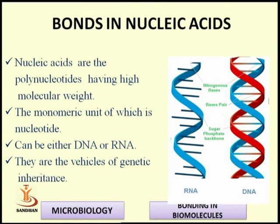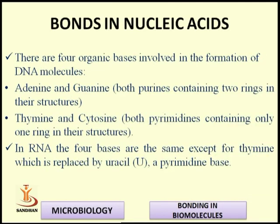The major bond playing a role in lipids is the ester bond. The fourth biomolecule is nucleic acid. Nucleic acids are polynucleotides of high molecular weight; their monomeric units, nucleotides, can be either DNA or RNA. They are the vehicles of genetic inheritance. In DNA, the four organic bases are adenine and guanine (purines, containing two rings) and thymine and cytosine (pyrimidines, containing one ring). In RNA, thymine is replaced by uracil, a pyrimidine.